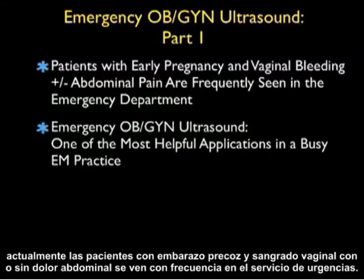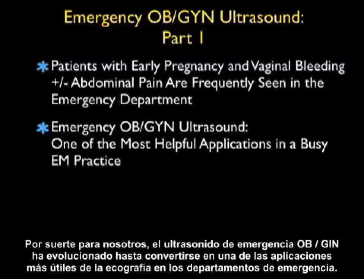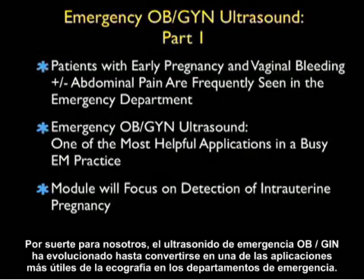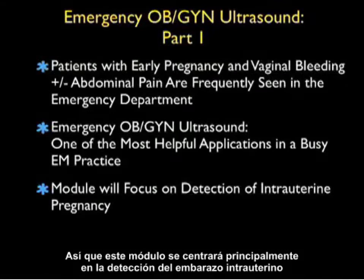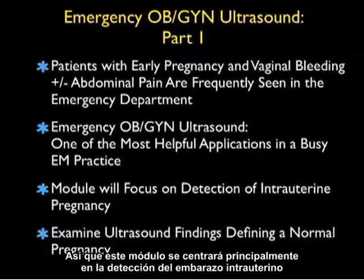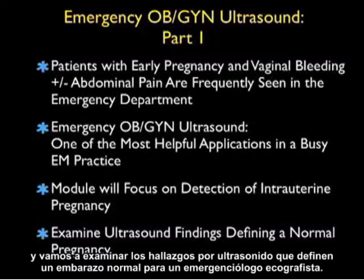Patients with early pregnancy and vaginal bleeding with or without abdominal pain are frequently seen in the emergency department. Emergency OBGYN ultrasound has evolved to be one of the most helpful applications of sonography in a busy emergency medicine practice. This module will focus primarily on the detection of intrauterine pregnancy and will examine the ultrasound findings that define a normal pregnancy for an emergency physician sonographer.